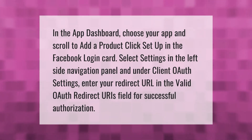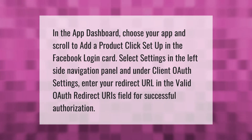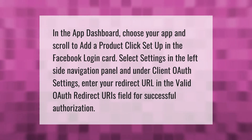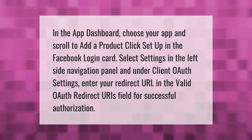In the app dashboard, choose your app and scroll to add a product, then click set up in the Facebook Login card. Select settings in the left side navigation panel, and under client OAuth settings, enter your redirect URL in the valid OAuth redirect URIs field for successful authorization.